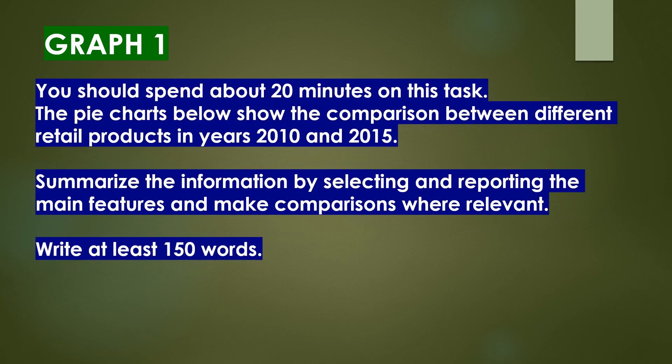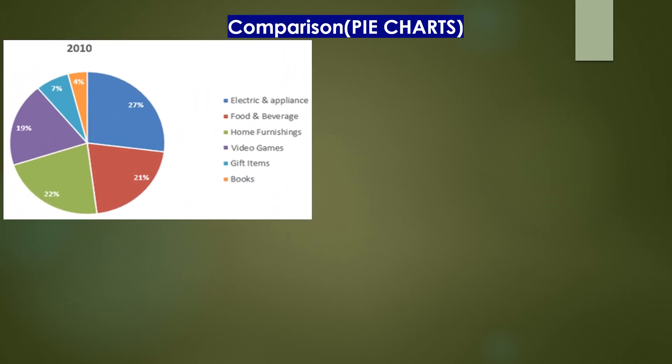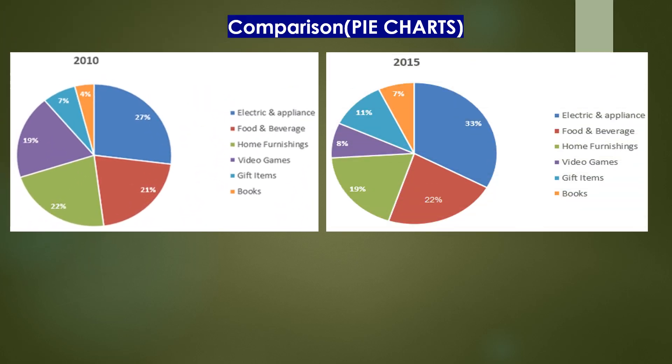Now let's take a look at a recent exam question. Graph 1: you should spend about 20 minutes on this task. The pie charts below show the comparison between different retail products in years 2010 and 2015. Summarize the information by selecting and reporting the main features and make comparisons where relevant. Write at least 150 words. So we have two different pie charts — one for year 2010 and the other for 2015.